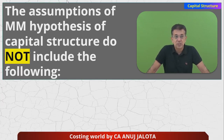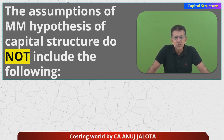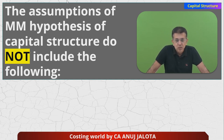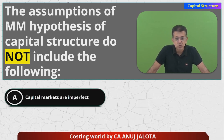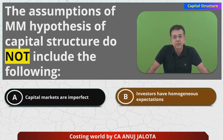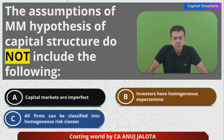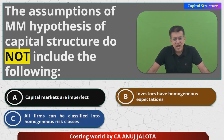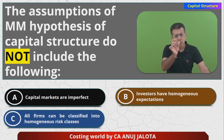Let's start the question for today. This is from the capital structure chapter. The question is: the assumptions of the Modigliani-Miller (MM) hypothesis of capital structure do NOT include which of the following? Options: A) capital markets are imperfect, B) investors have homogeneous expectations, C) all firms can be classified into homogeneous risk class. I'll say something about part C.